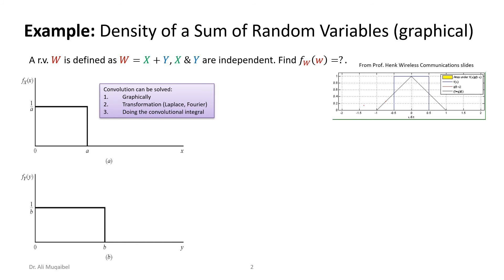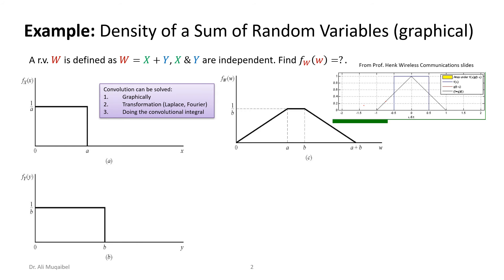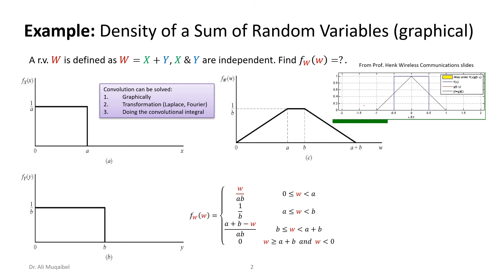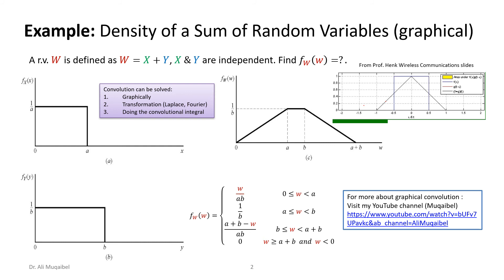If the widths of the two rectangles are the same you get a triangle; otherwise you get a trapezoid. In our case, the result spans from 0 to a + b, with a flat top between a and b and height 1/b. The area equals one, confirming this is a valid PDF. Written explicitly, there are five different segments — zero, a rising line, a constant, a falling line, and zero again. So even though X and Y are uniform, their sum W is not uniform; there is much less probability of W being very large or very small.